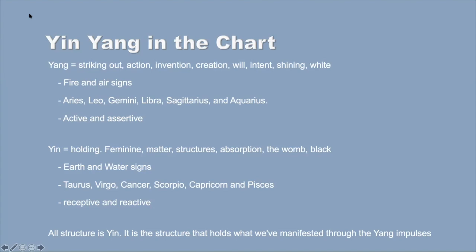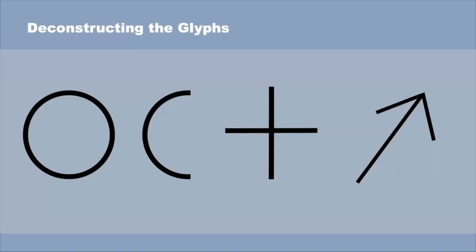All structure is yin, and the structure that holds what we've manifested through the yang impulses. The symbols that make up the glyphs for the planets tell us a lot about how the planet is meant to function, and specifically in relationship to the journey of mastery both in consciousness and matter. We find this by breaking them down to their individual pieces and then seeing how these elements are positioned to interact with each other.